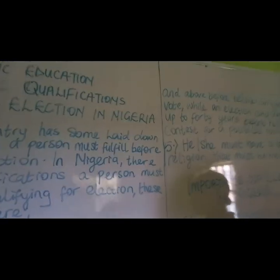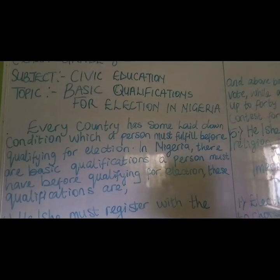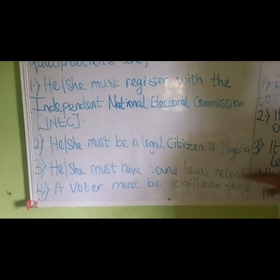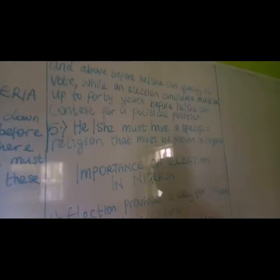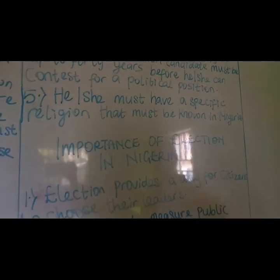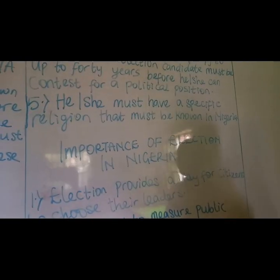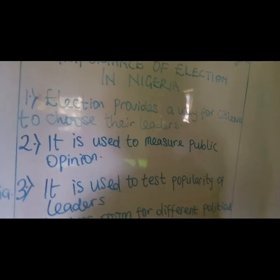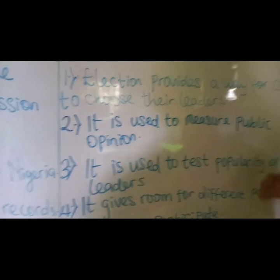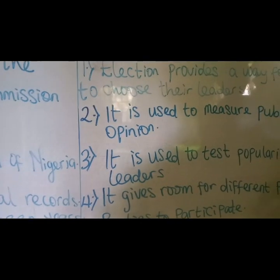Before the end of today's class, let's recap what we've covered. The basic qualifications for election in Nigeria are: he or she must register with INEC; must be a legal citizen; must have sound legal records; a voter must be 18 years and above, while an election candidate must be 40 years and above; and he or she must have a specific religion known in Nigeria. The importance of election includes: it provides a way for citizens to choose their leaders; it measures public opinion; it tests the popularity of leaders; and it gives room for different political parties to participate.